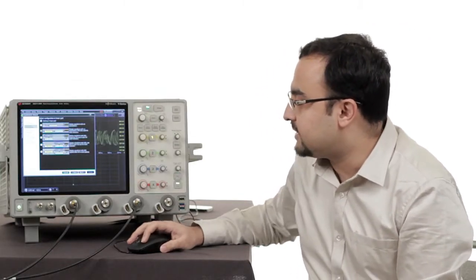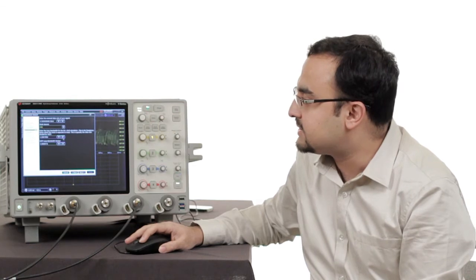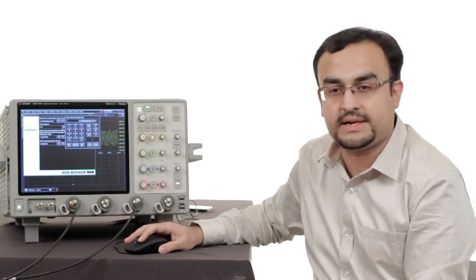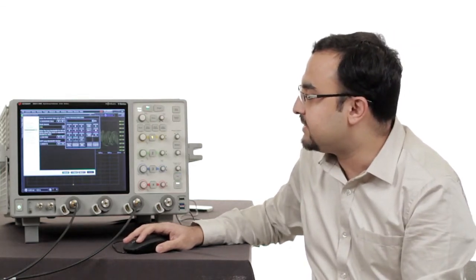So I choose this here for the second eye and through some simple clicks I go to the clock data recovery setup where I need to define the data rate which is 5 gigabit.